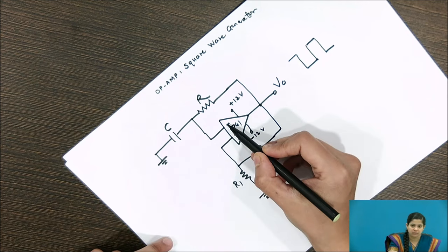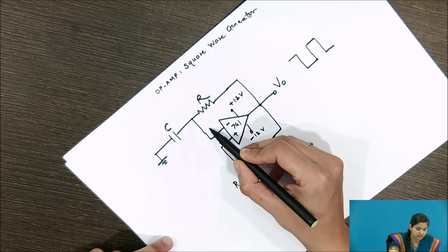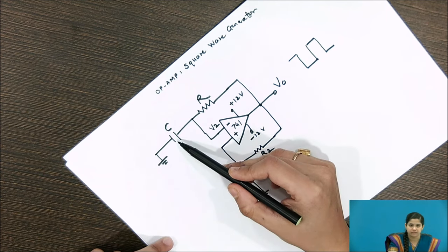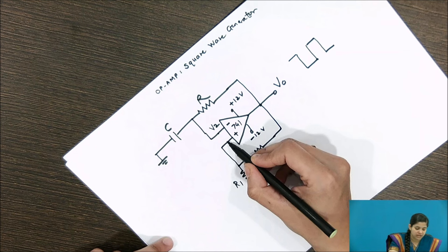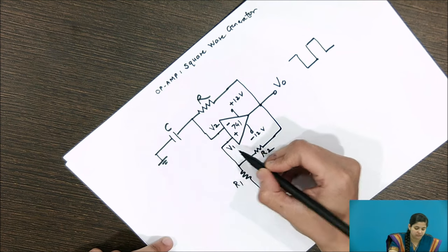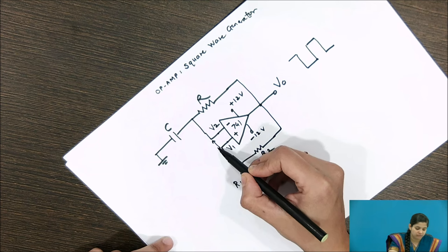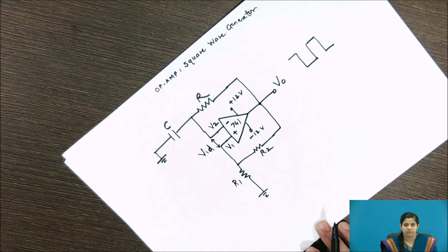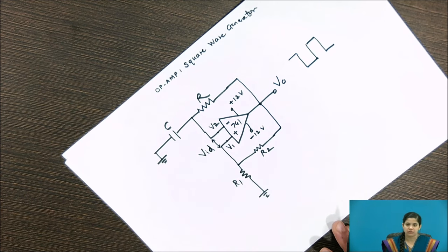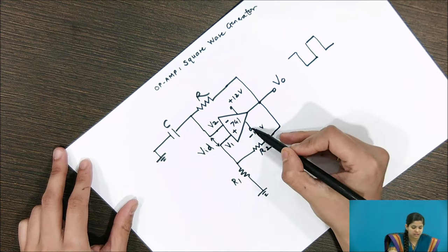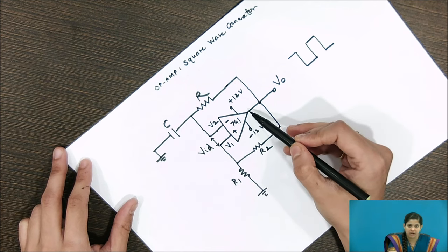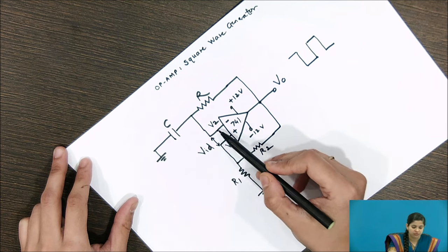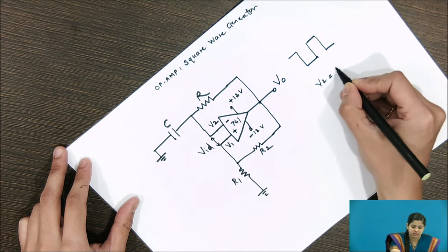At the inverting terminal, the voltage V2 is the voltage across capacitor C. The voltage at the non-inverting terminal is V1, and the differential voltage VID is taken as the difference between the non-inverting and inverting terminal voltages. As soon as we give the supply voltages to this op-amp, initially C has no charge, so at the initial stage V2 can be taken as 0 volt.